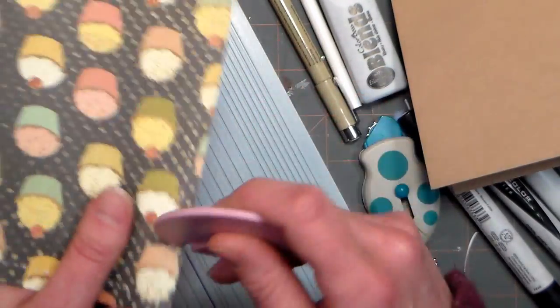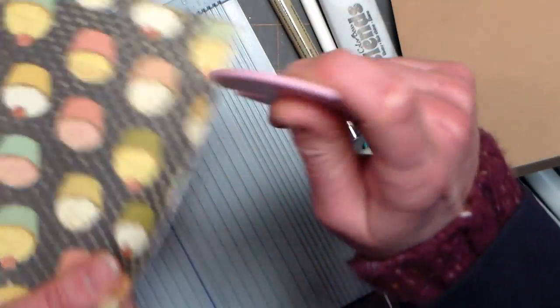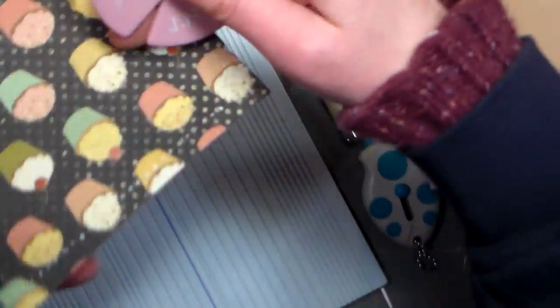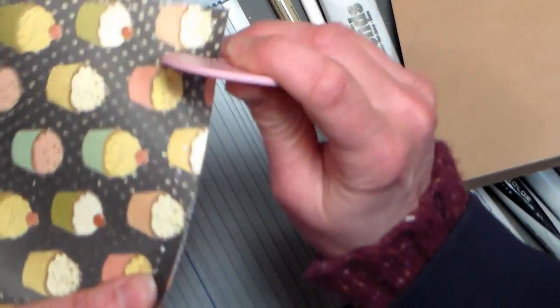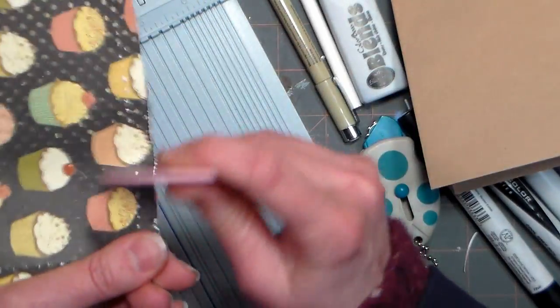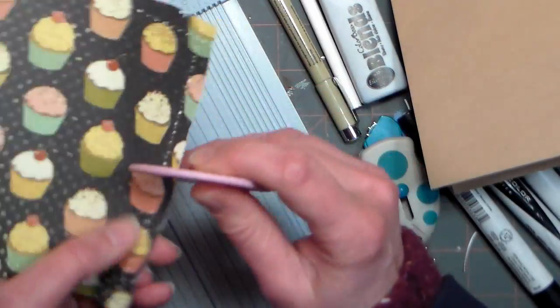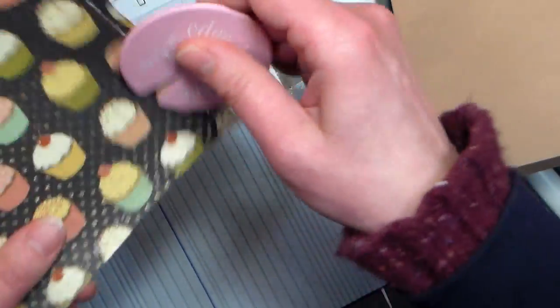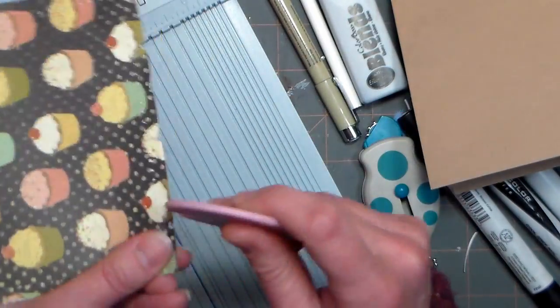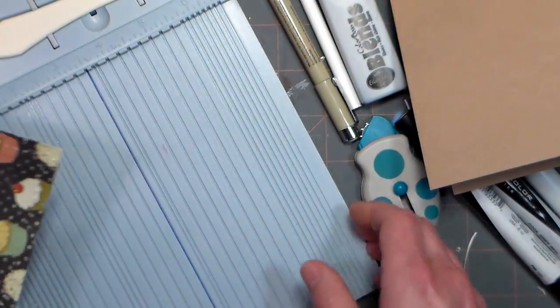Now, I'm using this little distressing tool. I got this probably eight years ago. It's a Heidi Swapp Distressor, just to scratch up the edges and make it look a little worn and shabby chic. You could use the edge of a scissor blade or your fingernail or whatever you want to do this. You don't have to have this special tool, but if you do, it's awfully handy.